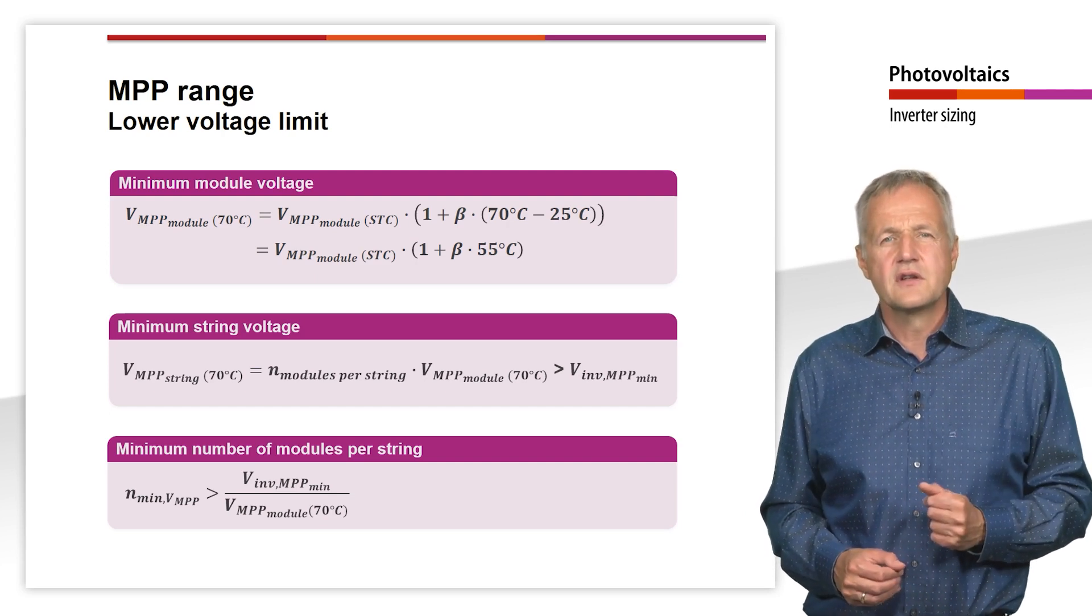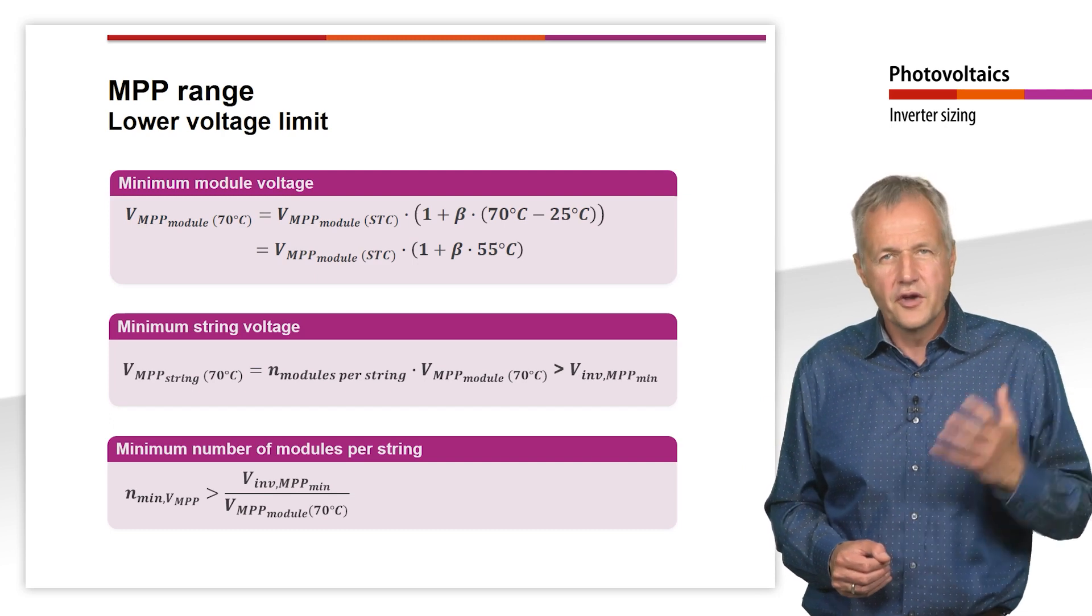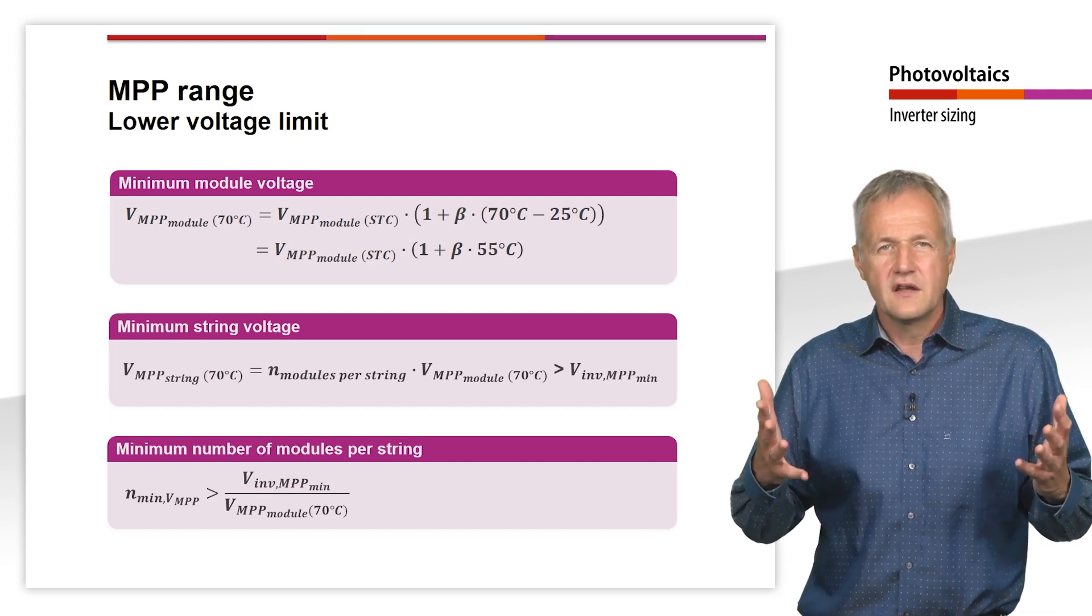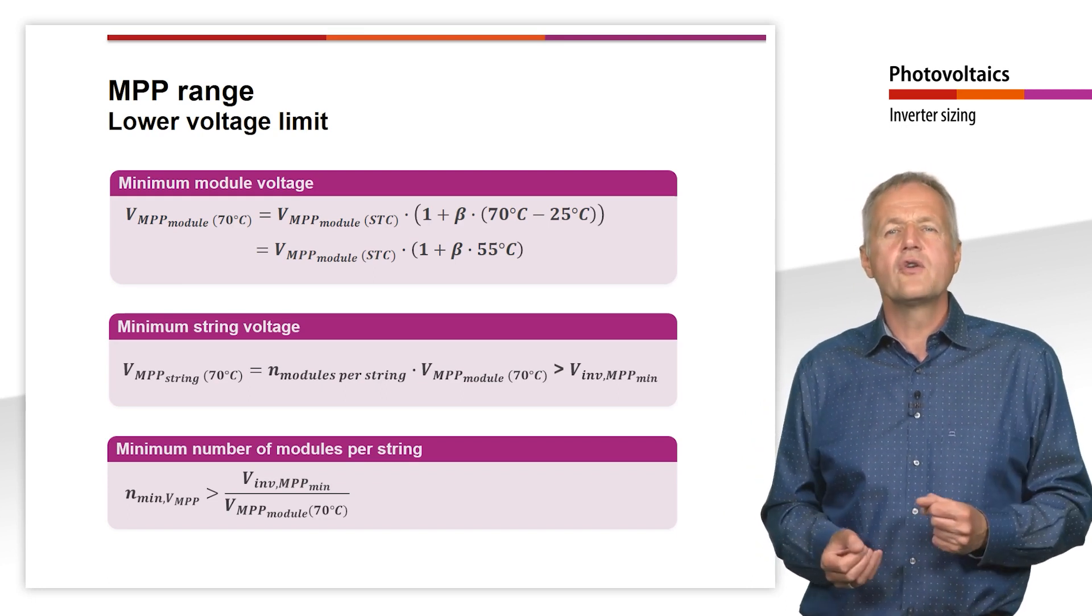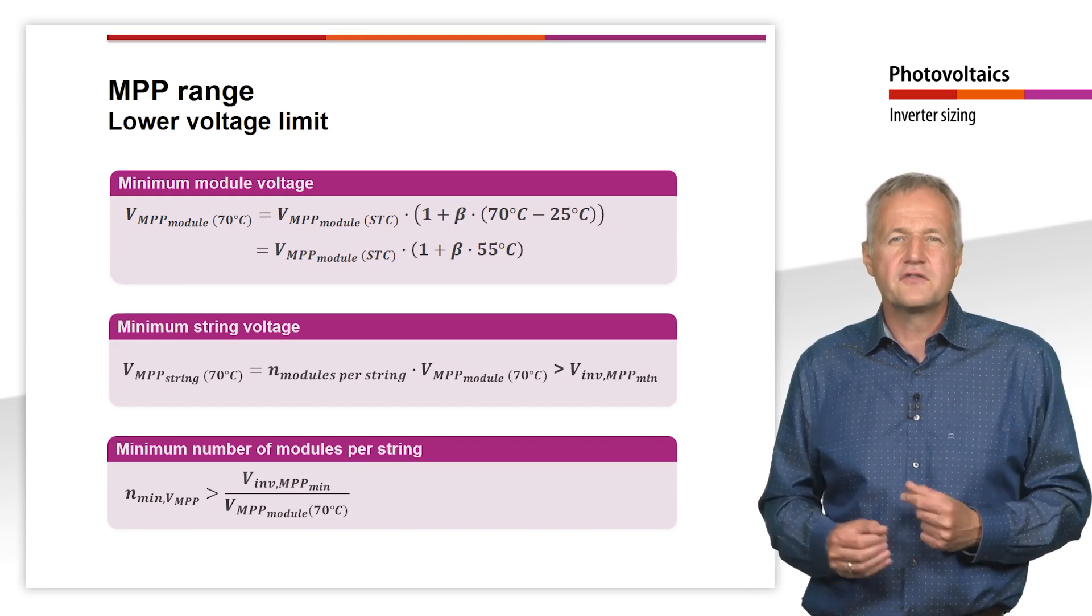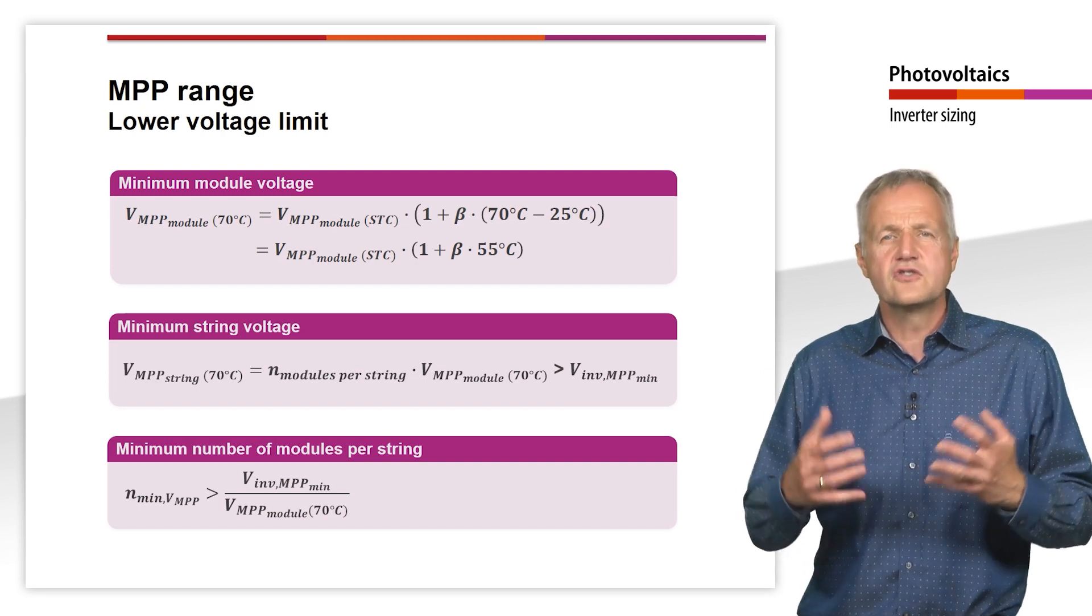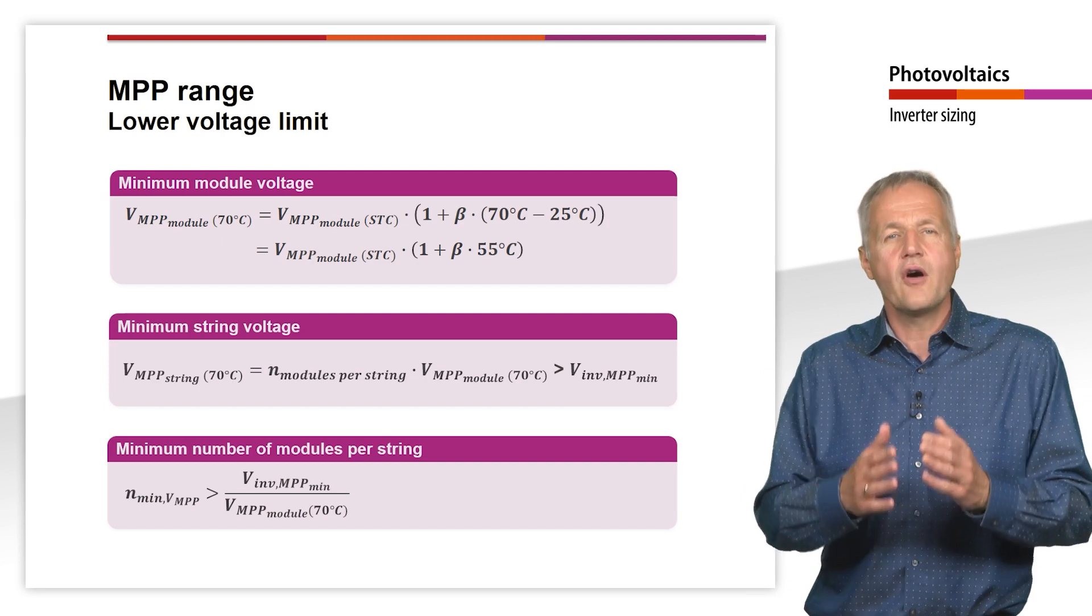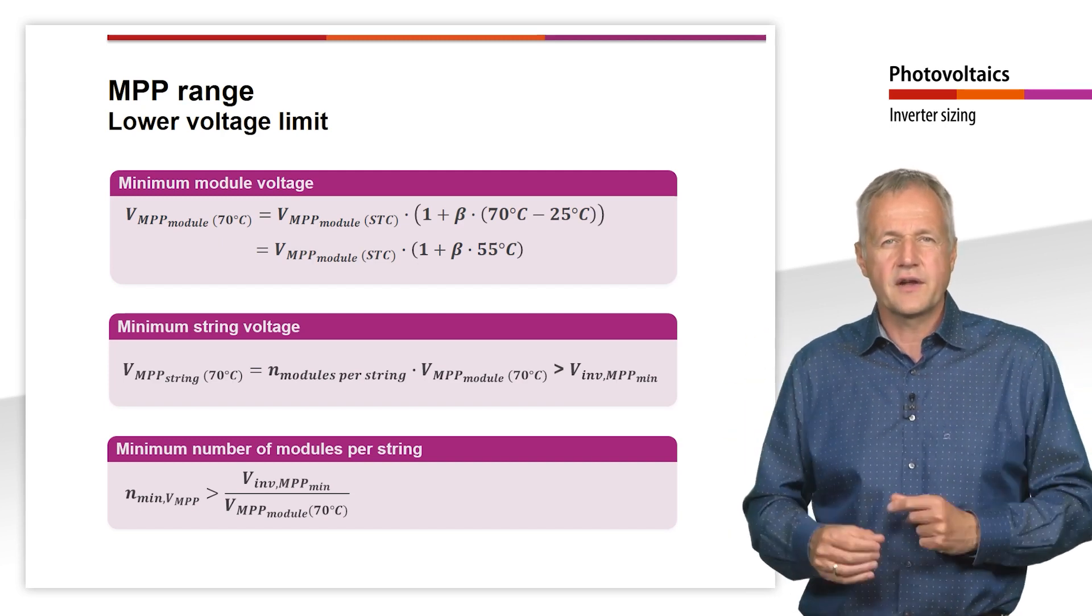If you connect too few modules in series, the inverter will not be damaged. However, you have to expect that especially in the warmer summer months, the inverter can no longer operate the solar modules at the MPP and you have to accept higher yield losses. In practice, this should of course be avoided and a sufficient number of solar modules should always be connected together in one string.